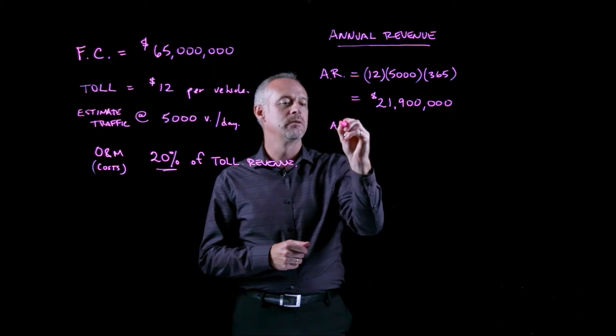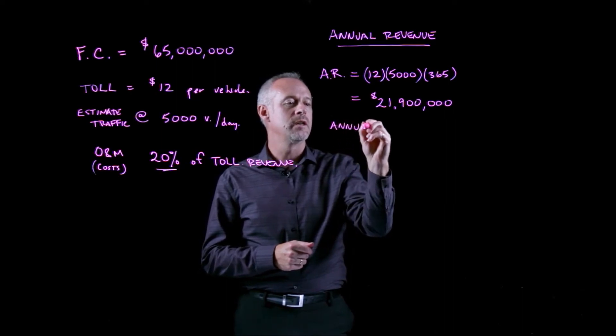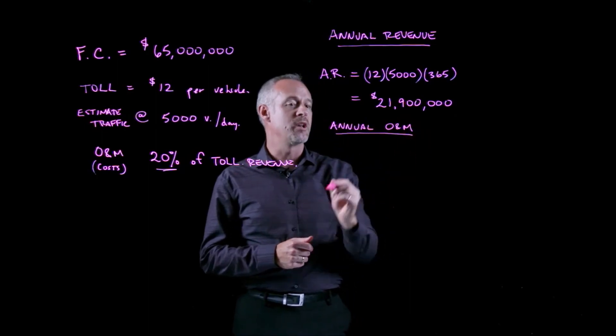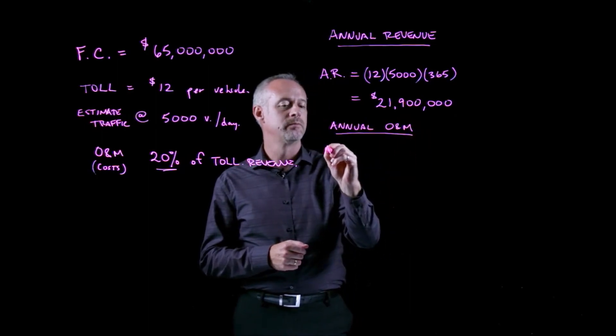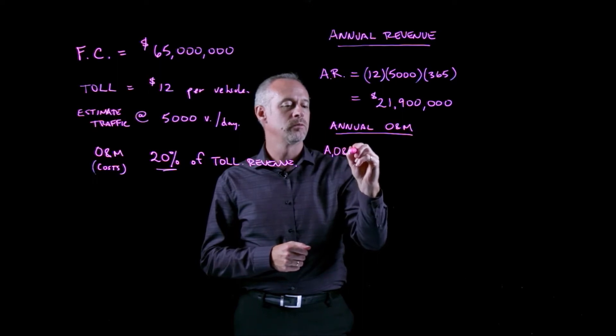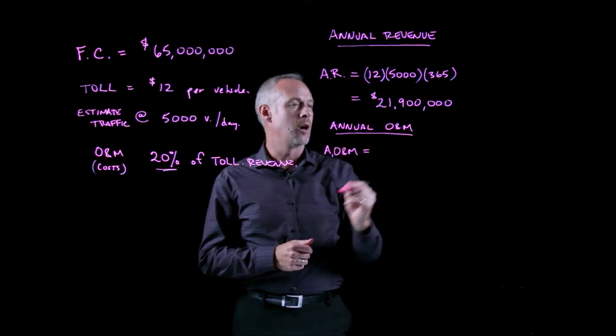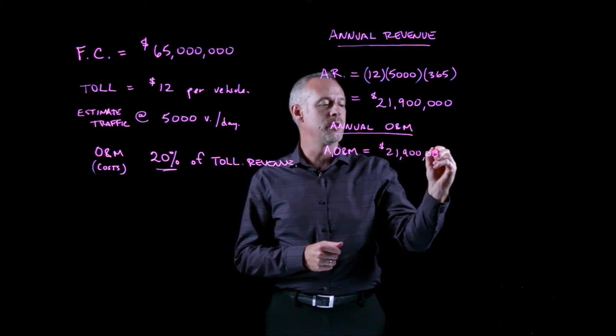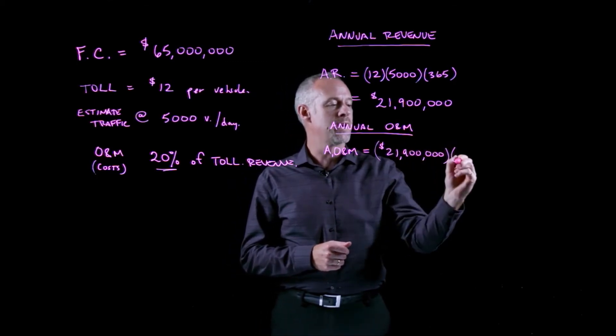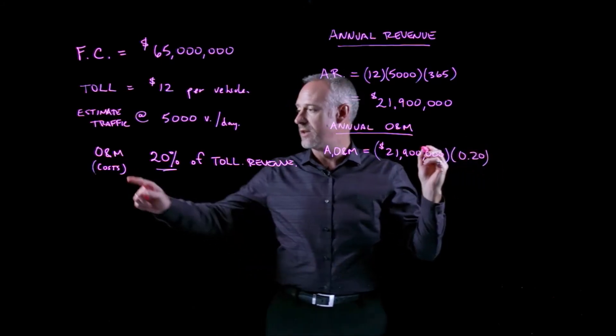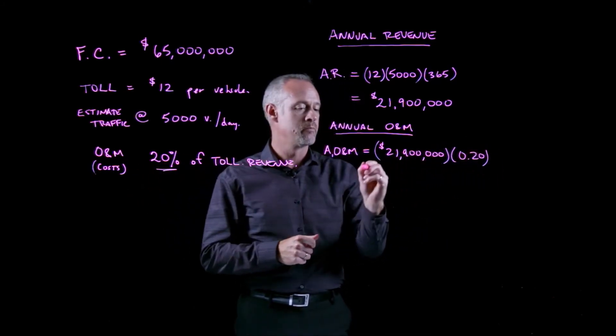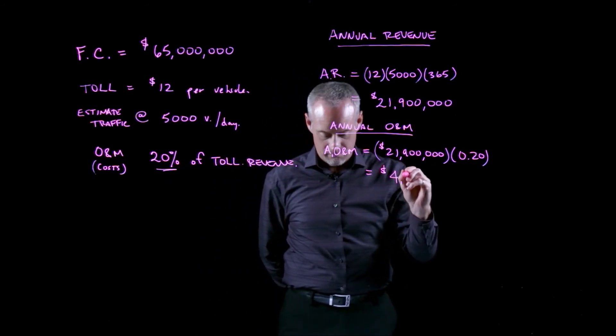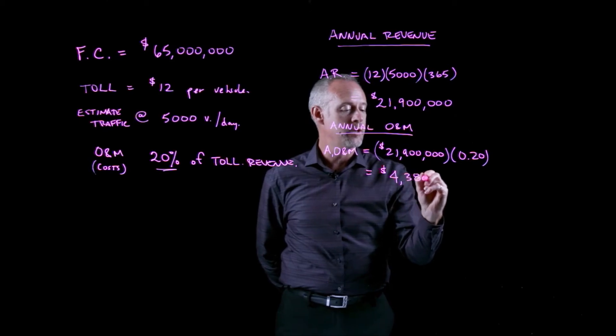Now we can also calculate our annual operating and maintenance costs. The annual operating and maintenance costs is essentially the $21,900,000 times our 20% we've got over here, and that number is $4,380,000.